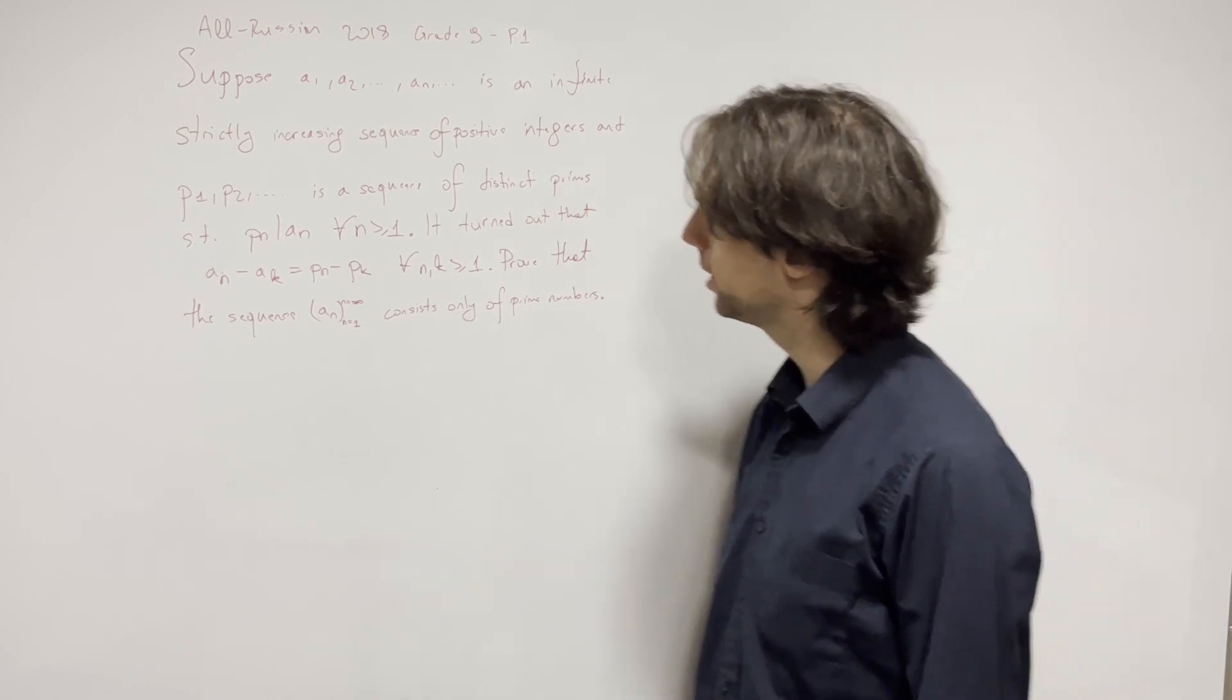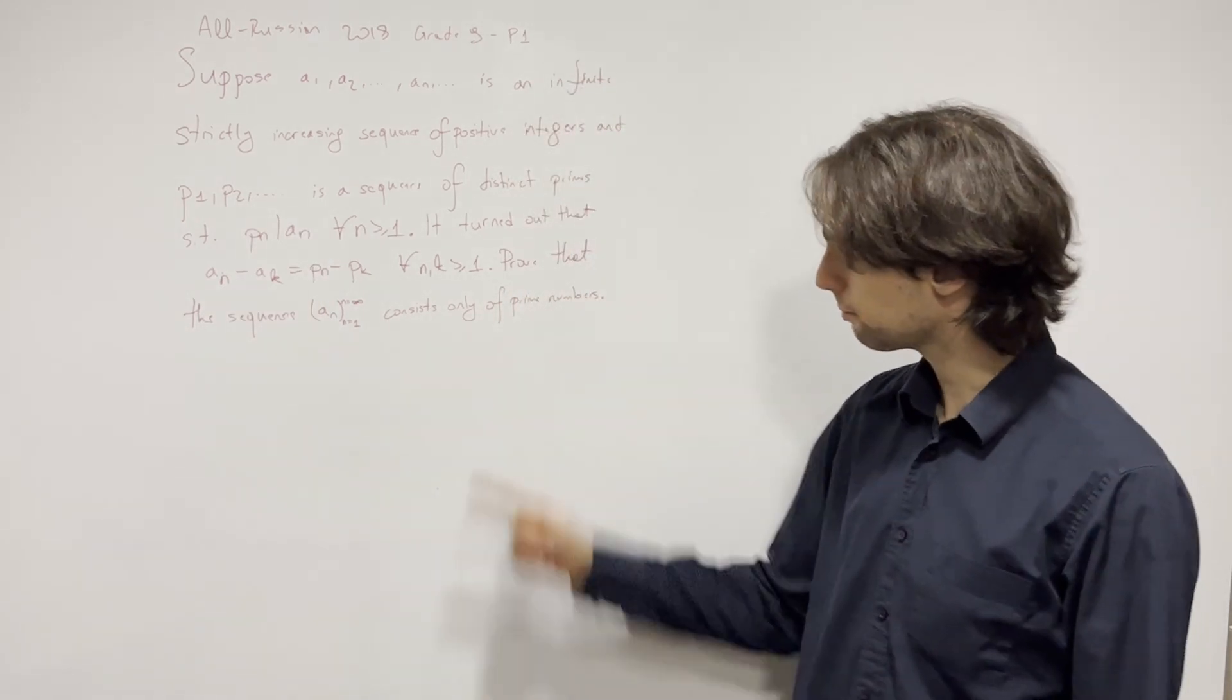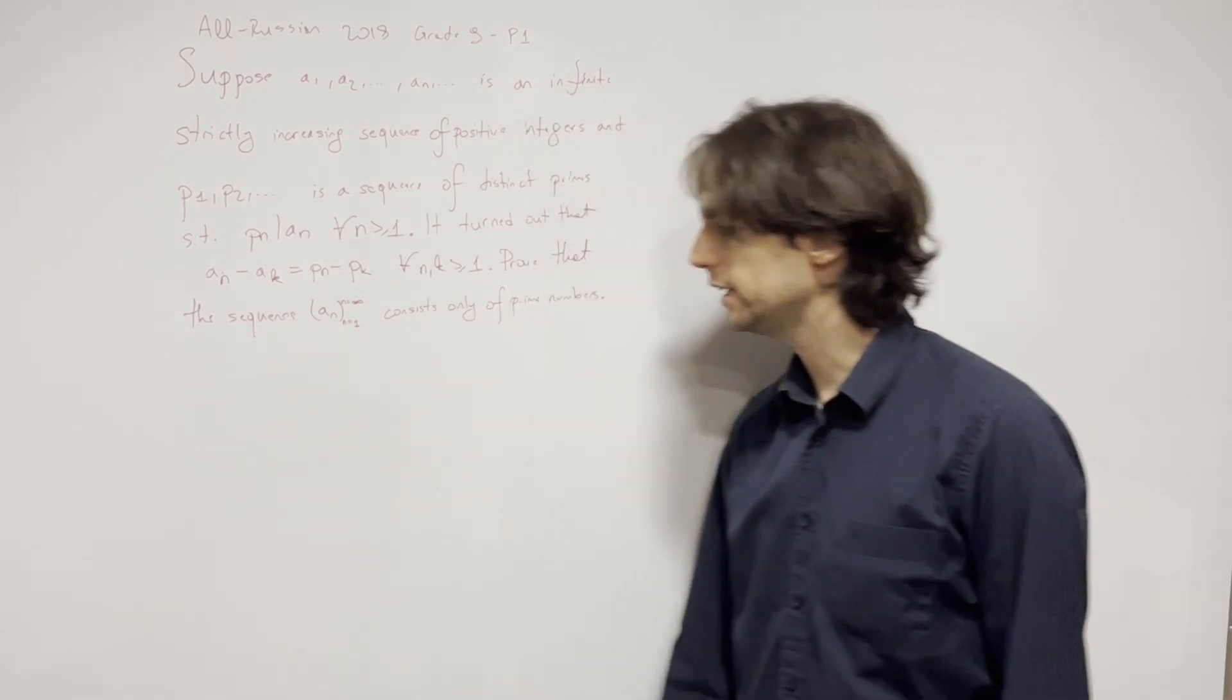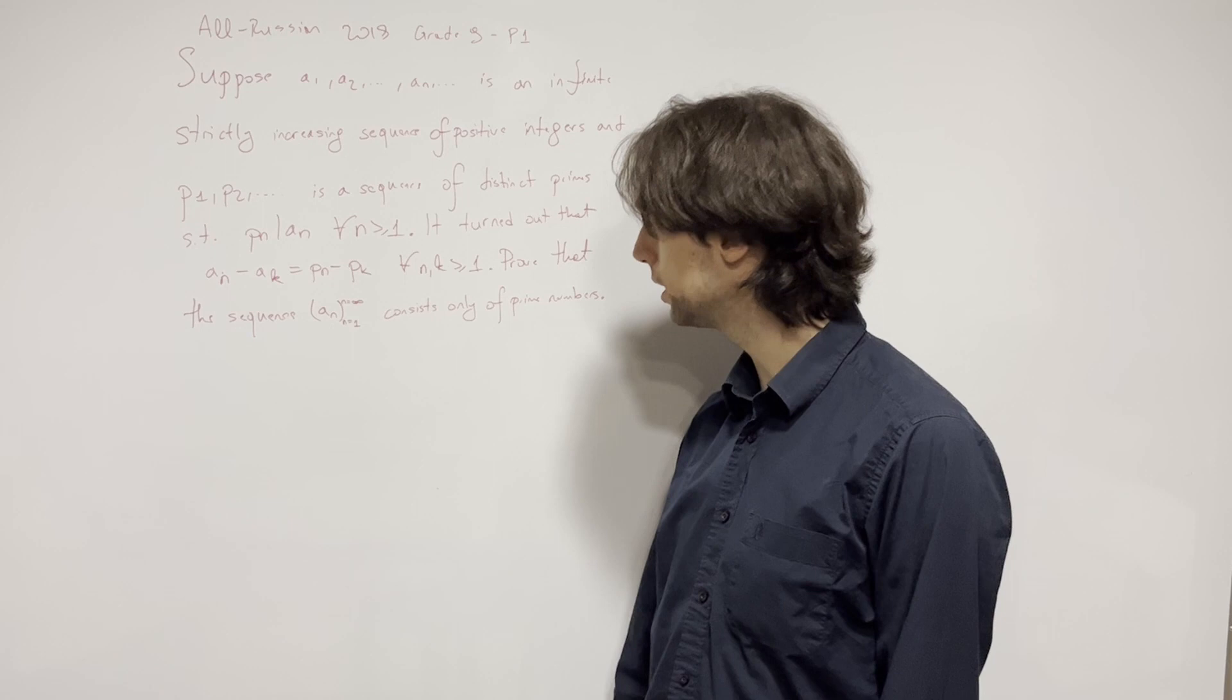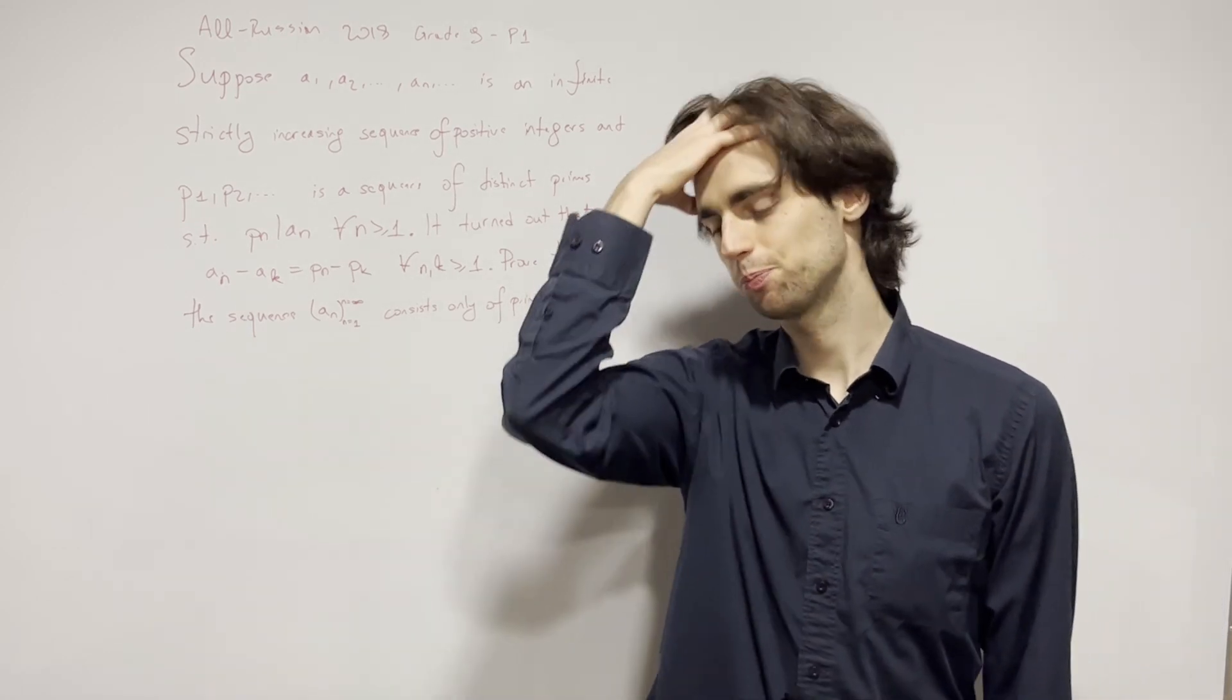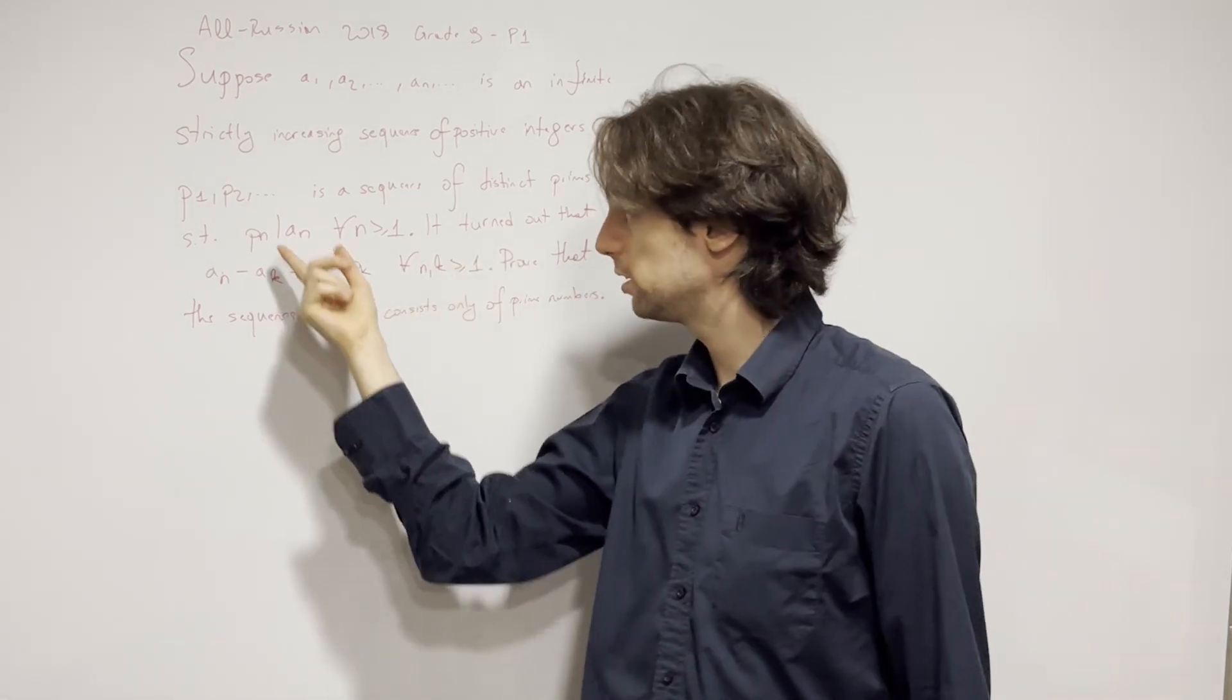This is also an infinite sequence of primes. They are distinct. It turns out we have a_n minus a_k is divisible by p_n minus p_k for all n and k greater or equal to one. We must prove this sequence only consists of prime numbers.